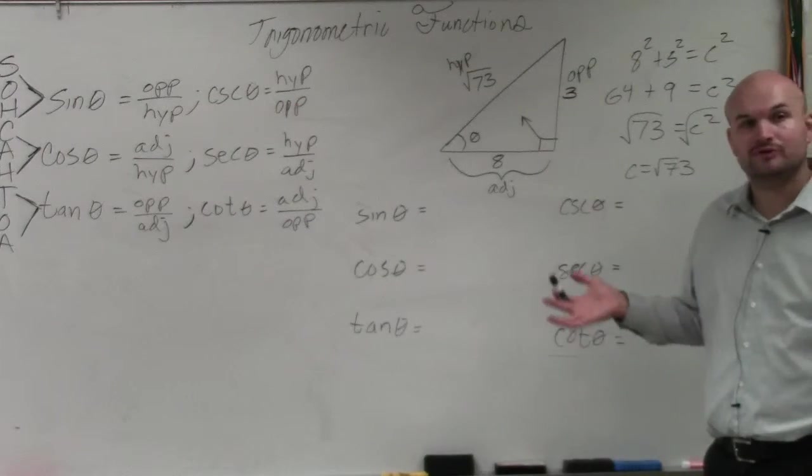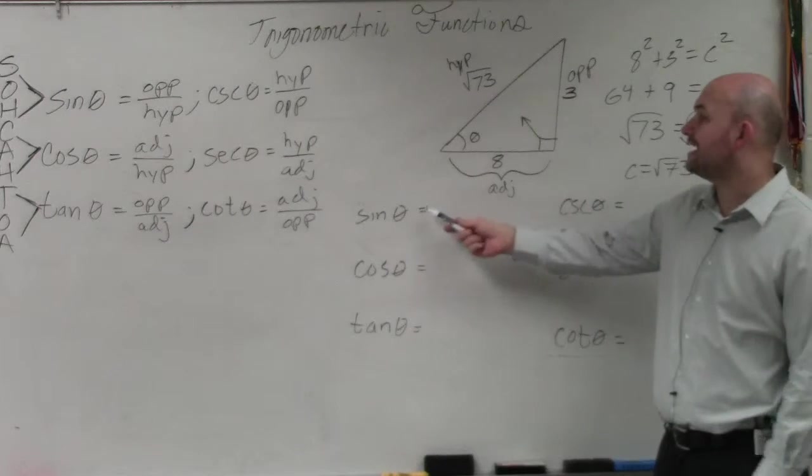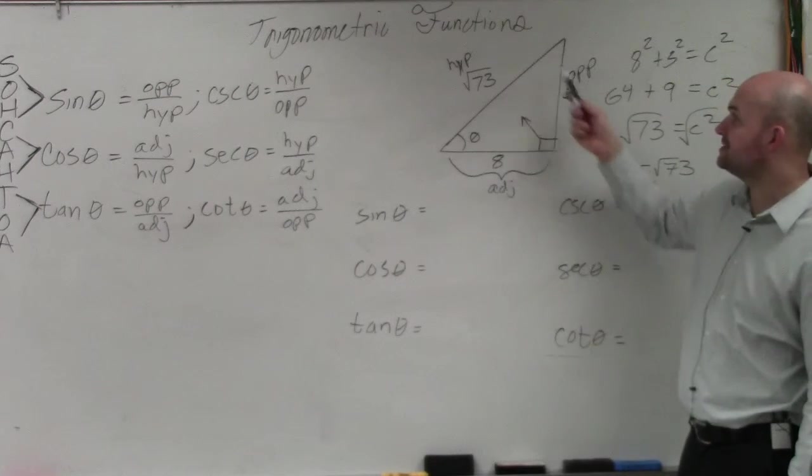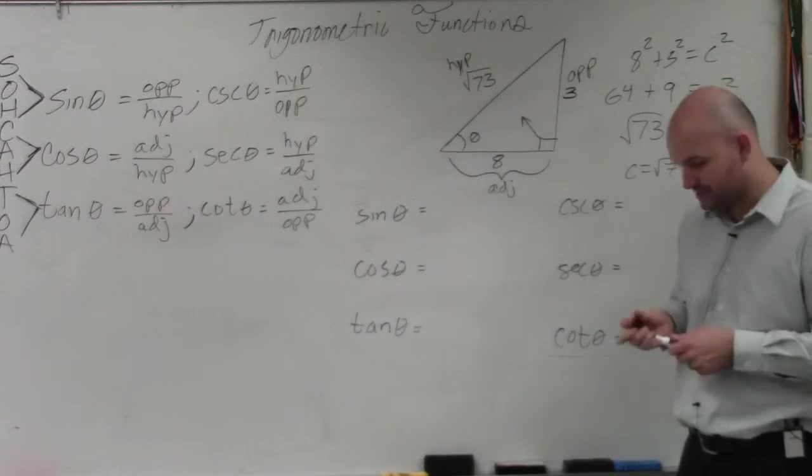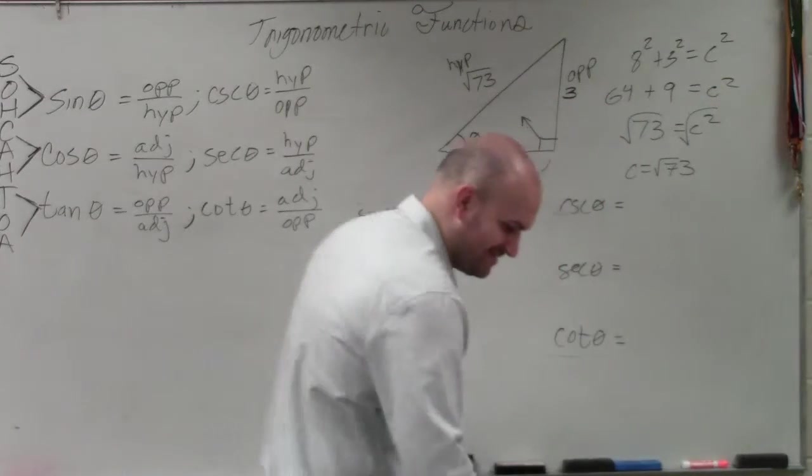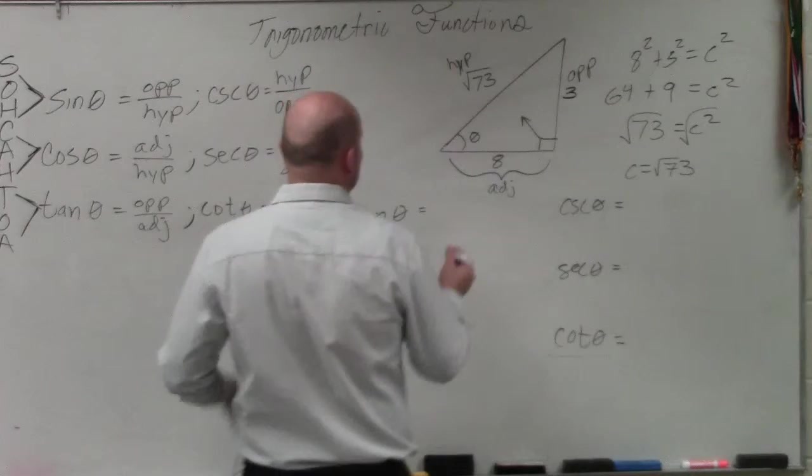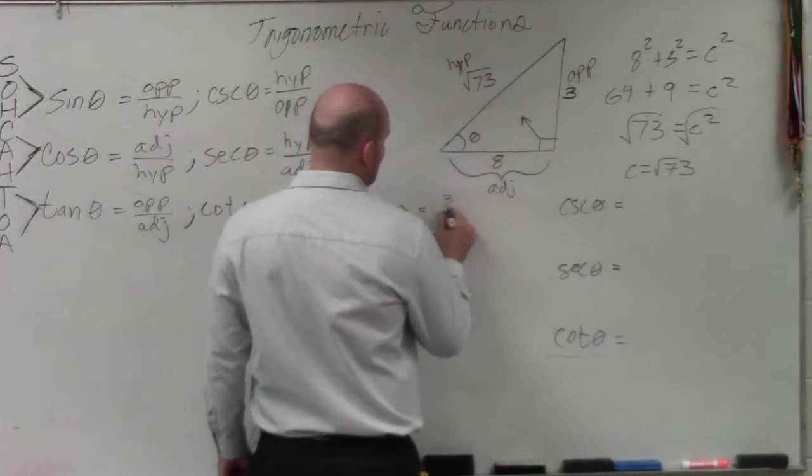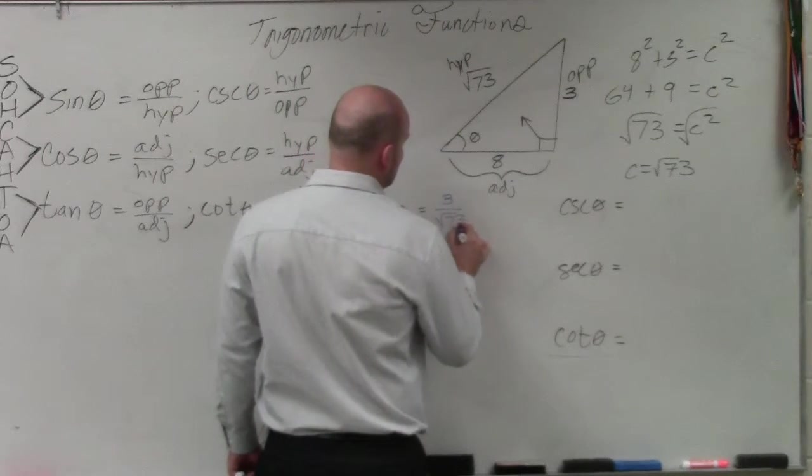So now, we just have fun. Sine is opposite over hypotenuse. Let's do this in different colors. Isn't that exciting? Different colors. So that's 3 over the square root of 73.